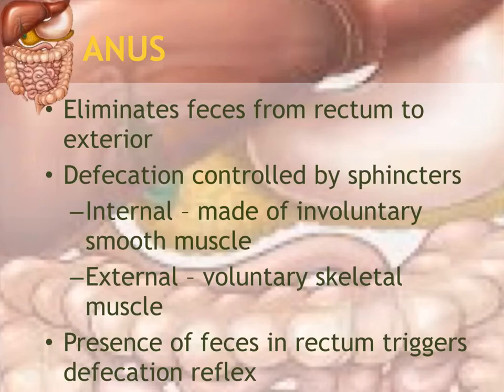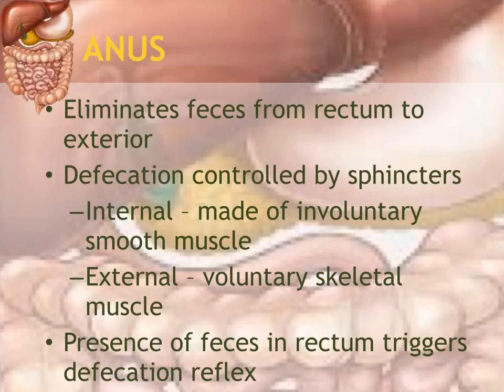There are two sphincters that control defecation. The internal sphincter is controlled by involuntary smooth muscle, so you have no control over it. The external sphincter is voluntary skeletal muscle, which we do control — and this is the reason we can make it to the restroom in time. The presence of feces in the rectum is what triggers the defecation reflex.